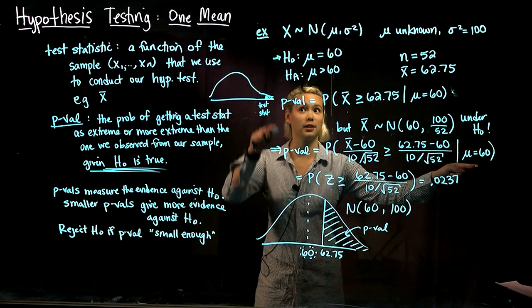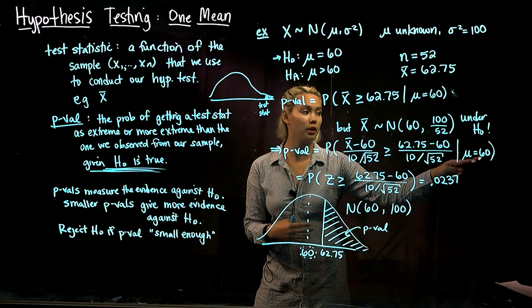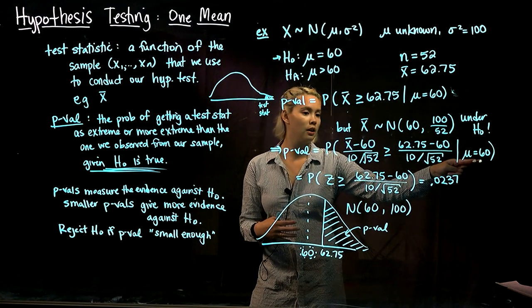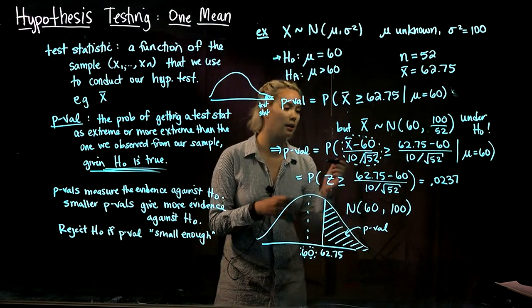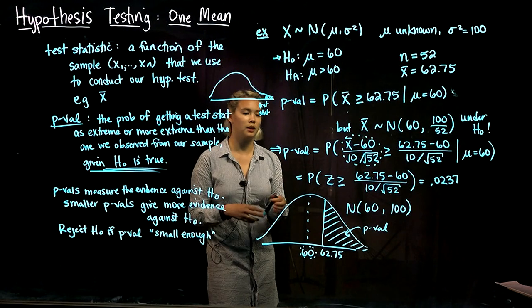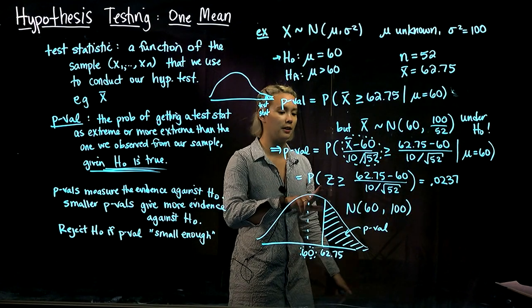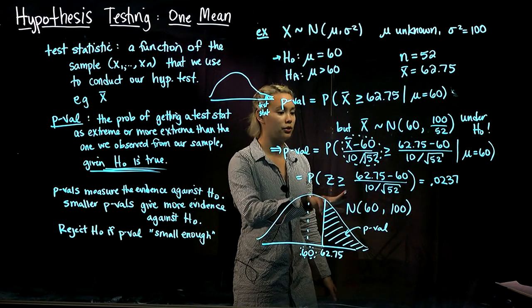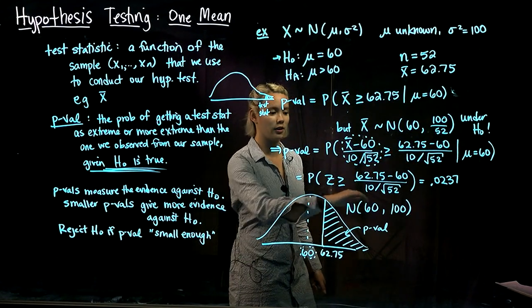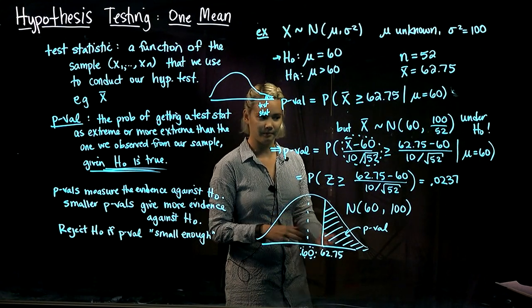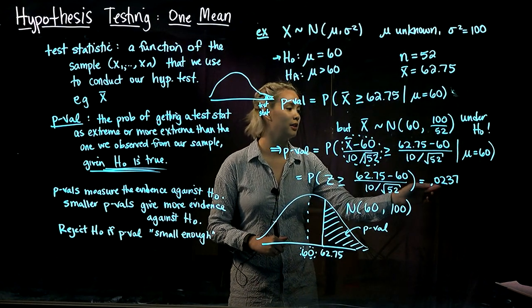Given that the null hypothesis mu equals 60 is true, we know this standardized quantity follows a standard normal distribution. If we denote the standard normal random variable by Z, the p-value equals the probability that Z is greater than or equal to (62.75 minus 60) over (10 divided by root 52). Using a table or pnorm, we calculate the p-value is 0.0237.